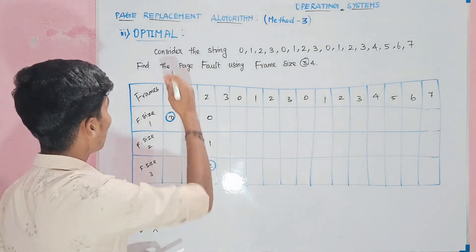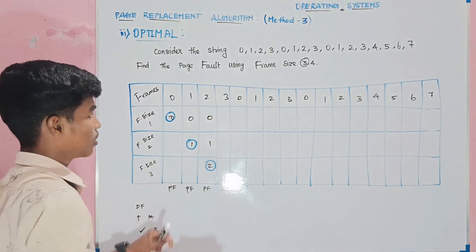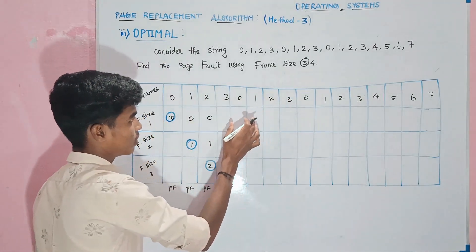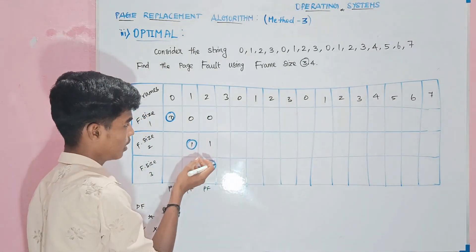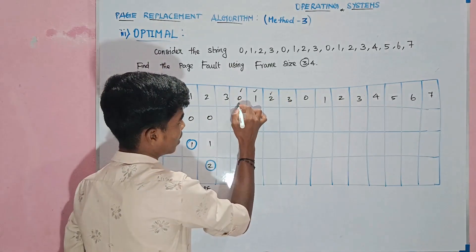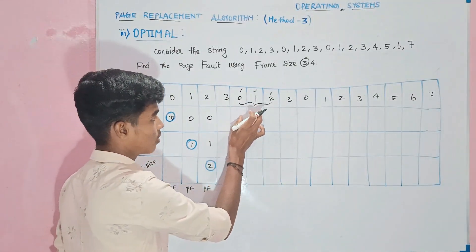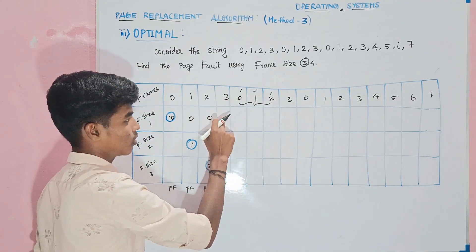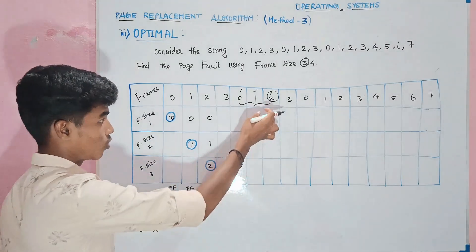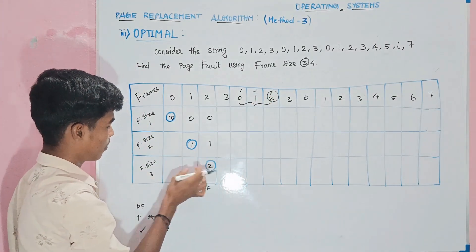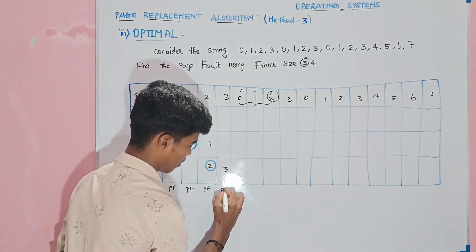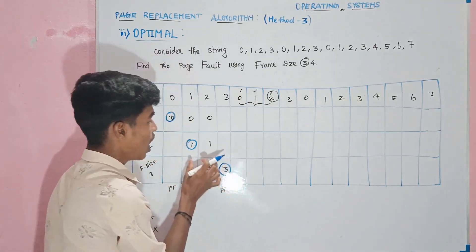Here is the page frame. From the left, the values are 0, 1, 2. For example, 0 appears at position 0, 1 appears at position 0, 2 appears at position 0. The count value is 0.